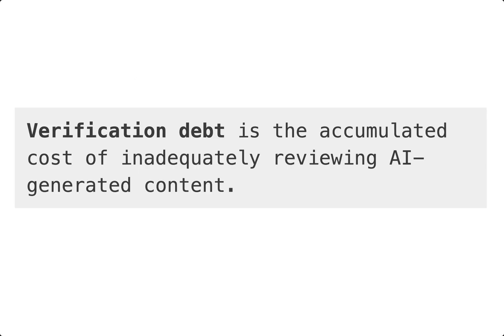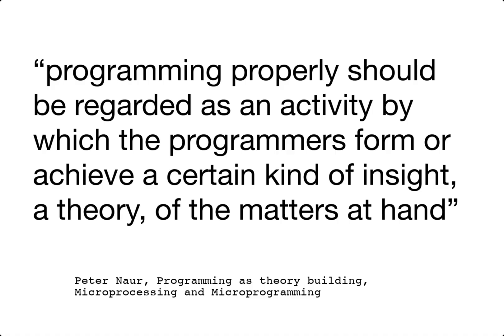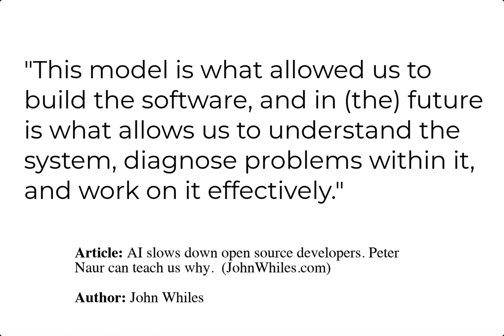Verification debt also incurs costs beyond inaccurate outputs, and we really see this in software development. In software development, programmers rely on a mental model of the source code, the problem that source code solves, and the environment in which it operates — an idea expressed by Turing Award-winning computer scientist Peter Naur. When programmers outsource work to generative AI and do not sufficiently verify and review the outputs, their own mental models and shared understanding of the software can be expected to suffer. But these mental models are critical to effective future development of the software.